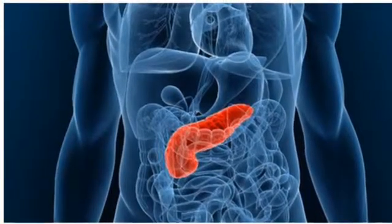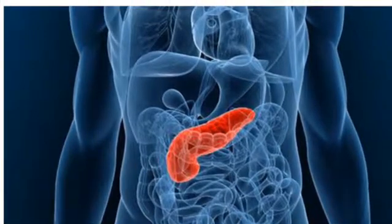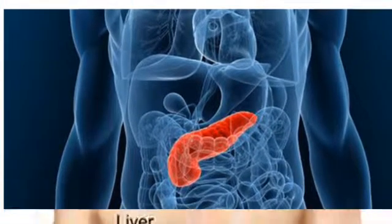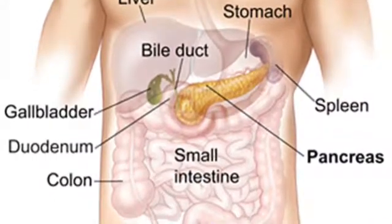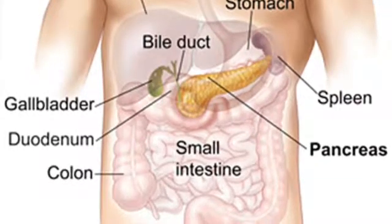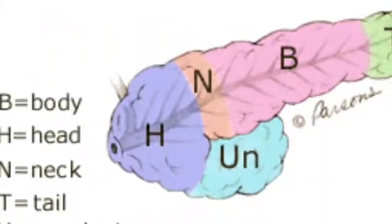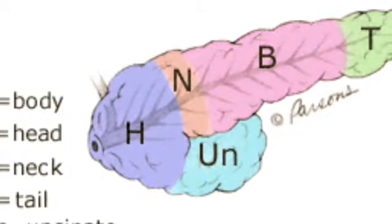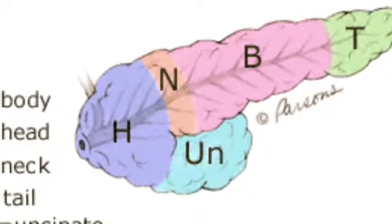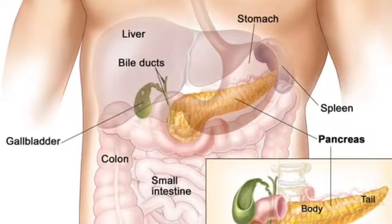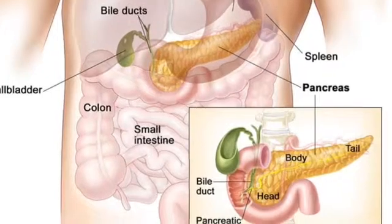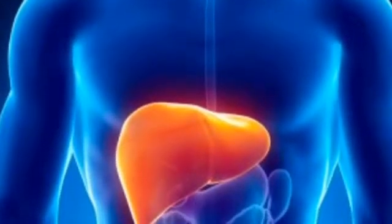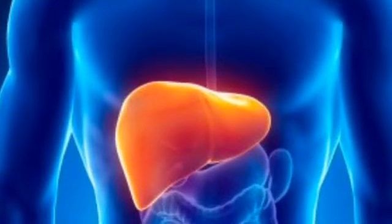The pancreas is 6 inches long and sits behind the stomach at the back of the abdomen. It helps to maintain blood sugar levels and is related to digestion because it secretes many of the enzymes used in it. The pancreas connects to the duodenum through the pancreatic duct, and secretes lipase, which breaks down fats; amylase, which breaks down carbohydrates; and trypsin, which breaks down proteins in the gastrointestinal tract.